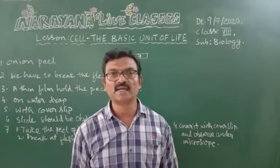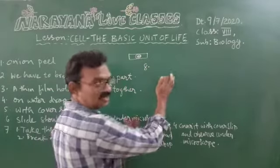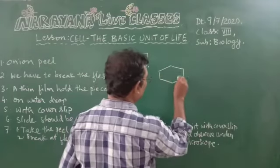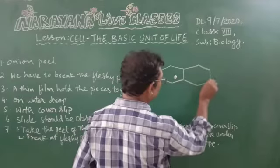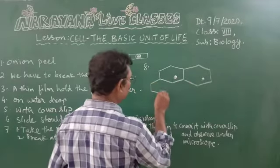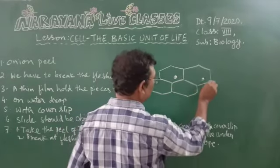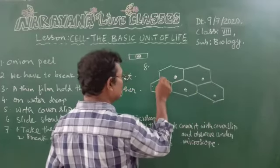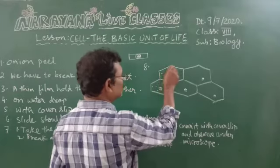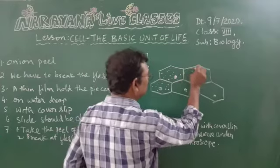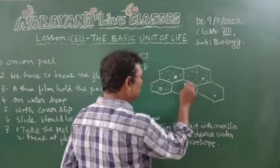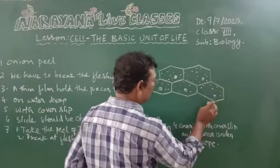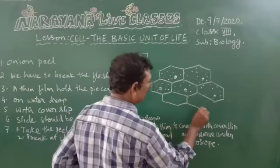Eighth question: draw the diagram of onion peel cells. Plant cells are not circular — they are somewhat rectangular in shape. When we observe the nucleus, it is not in the middle of the cell; it lies somewhat at the side of the cell. This is the diagram of onion peel cells. When observed under the microscope, this is the kind of figure we can see, and this is the type of diagram we may draw.